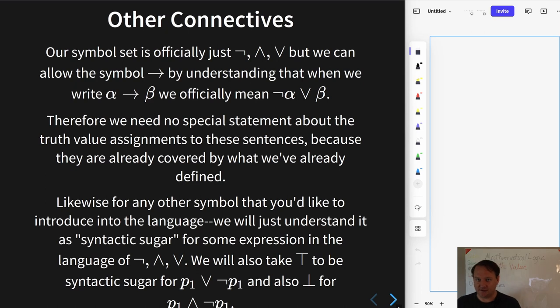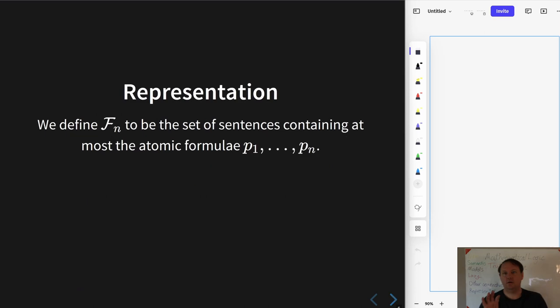Basically a symbol that when you take it seriously and say something about it, you always have to first translate it into the thing that it really is. So verum is syntactic sugar for this disjunction and falsum is syntactic sugar for this conjunction, p1 conjunction negation p1.